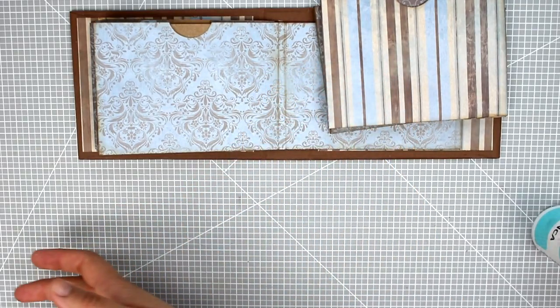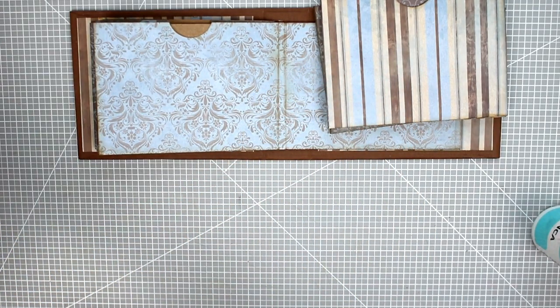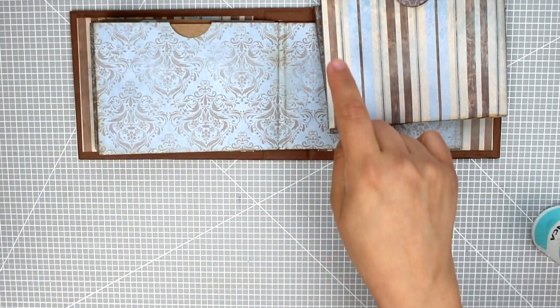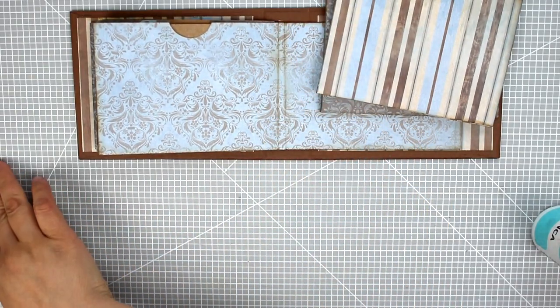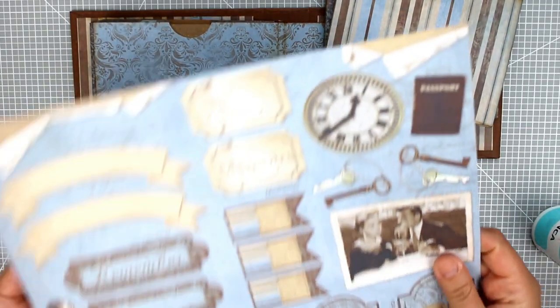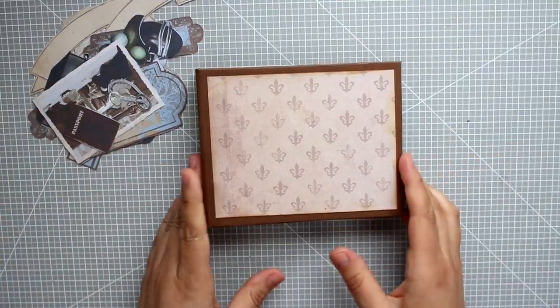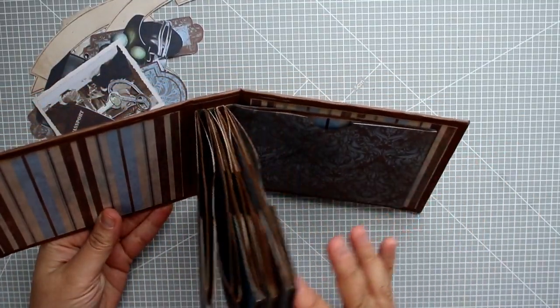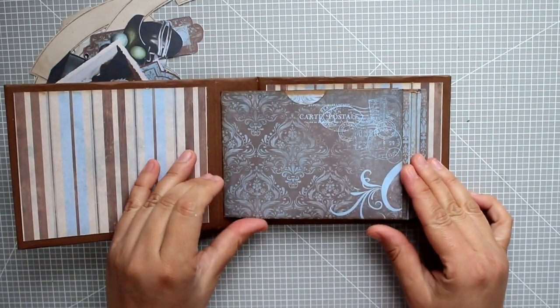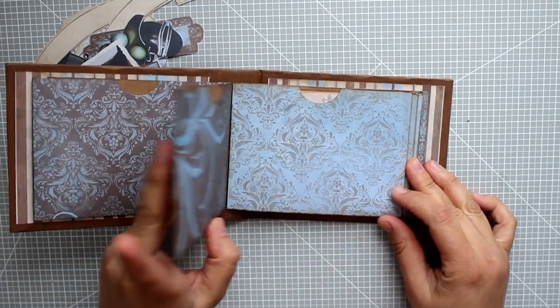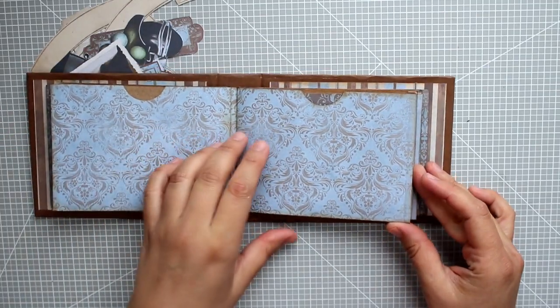And so we're going to glue the two remaining ones and we'll have the album assembled. We'll only have to decorate the cover. For that, what I'm going to do while the pages are drying is cut out all these figures with a cutter. Now it's done. I've glued all the pages. And this is how it looks inside, our mini album.